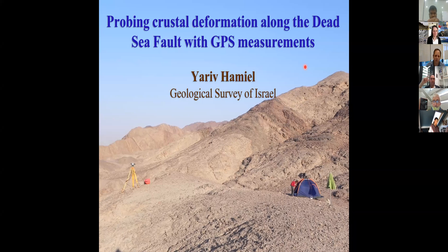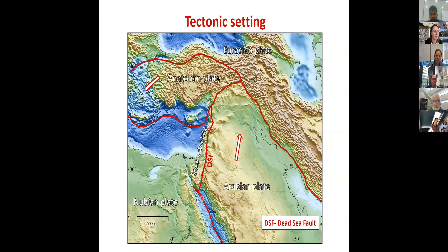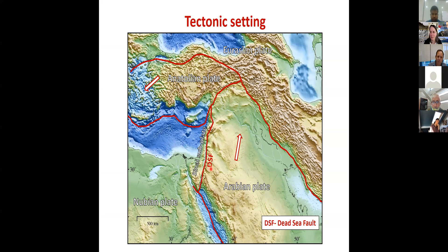Just a brief introduction: the Dead Sea Fault goes from the Red Sea in the south to Turkey and the Anatolian Plate in the north. It's about 1,000 km long and is the plate boundary between the Sinai and Arabia plates, accumulating left-lateral strike-slip motion along the fault in the order of about 5 mm per year — we'll see what the slip rate is in a minute.